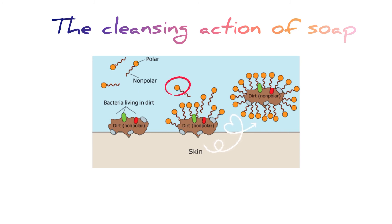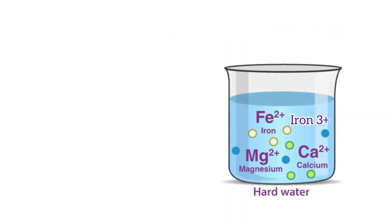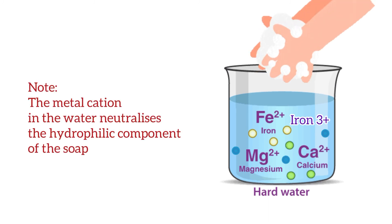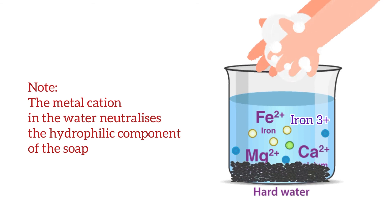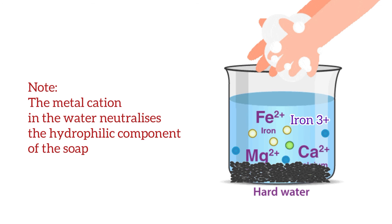Note that in clean water this process occurs, but in hard water this process does not occur. Hard water contains high concentrations of calcium, magnesium, iron 2+, and iron 3+. When soap is used in hard water, the metal cation in the water neutralizes the hydrophilic component of the soap, which precipitates and insoluble compounds are formed. Therefore, more soap is needed so that some of the soap molecules still have sodium or potassium and can perform the cleaning action.